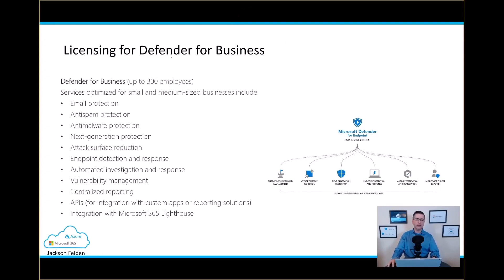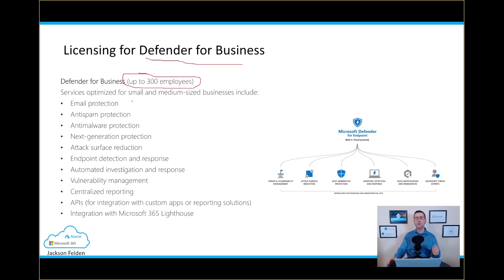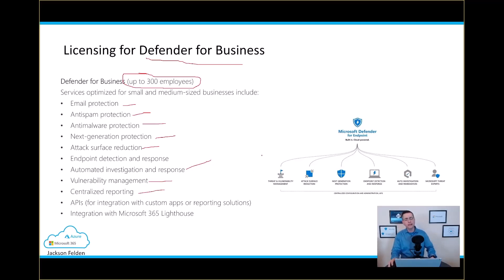The next one is Defender for Business. Please remember, if your organization has more than 300 employees, you won't be able to use Defender for Business. Defender for Business sits somewhere between Endpoint P1 and P2 — it goes beyond P1 at a competitive price. It includes email protection, anti-spam, anti-malware, next-generation protection, attack surface reduction, automated investigation, and vulnerability management. These are aimed at what Microsoft calls small and medium-sized businesses.